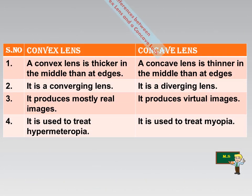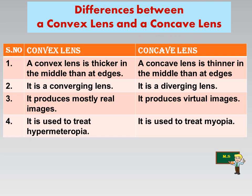Let's see the differences between convex lens and concave lens. Convex lens is thicker in the middle than the edges, while concave lens is thinner in the middle than the edges. Convex lens is a converging lens, while concave lens is a diverging lens. Convex lens produces mostly real images, but concave lens produces virtual images. Convex lens is used to treat hypermetropia, and concave lens is used to treat myopia.